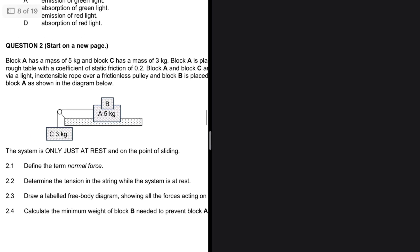The tension is between A and C, as they are connected by a light inextensible string. I'm hesitant to use block A because block B is on top of it and I don't know the mass of B. It's better to use block C to find the tension first. If that doesn't work, I'll be forced to use A and B, but initially it's better to start with C because we have all the variables we need.